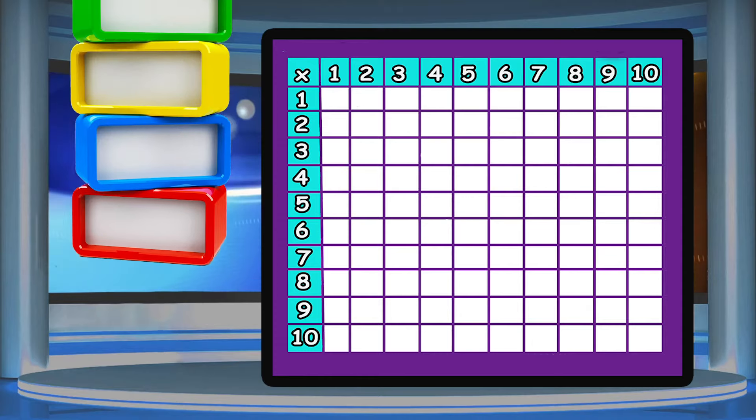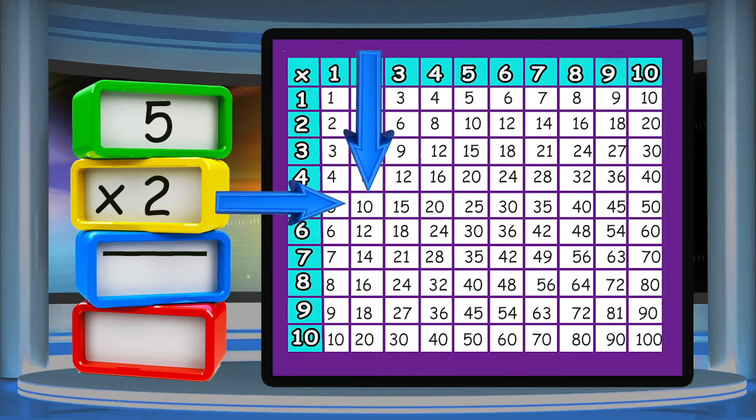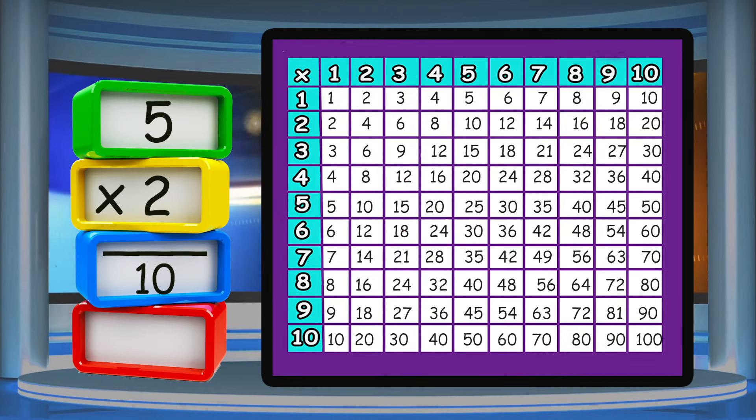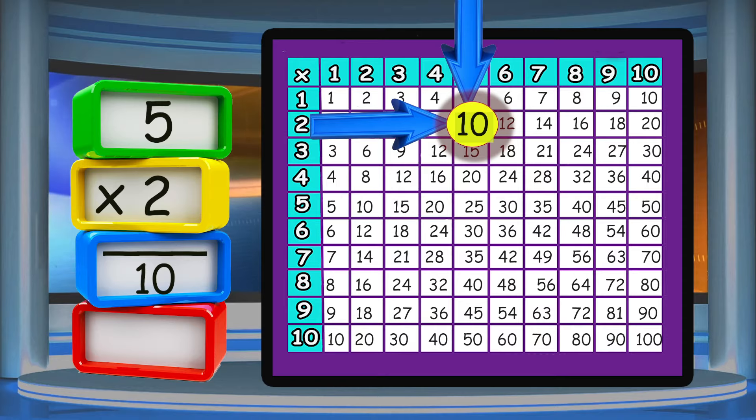Let's try another multiplication fact: five times two. If I follow the five over and go down from the two, they meet at the ten. Five times two is ten. This time, let's try going over from the two at the side and down from the five at the top. They will still meet at the number ten.